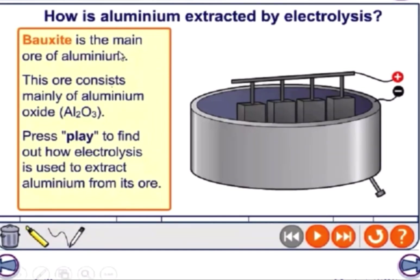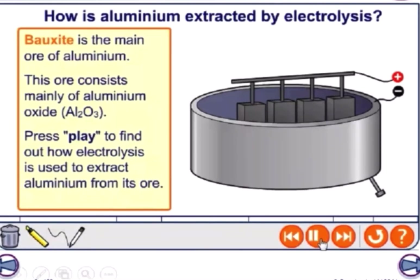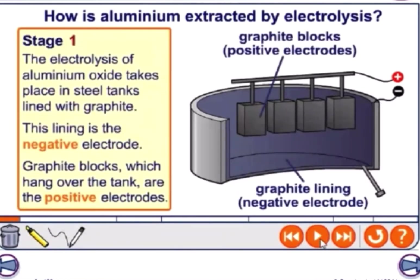Bauxite is the main ore of aluminum and consists mainly of aluminum oxide. In Stage 1, the electrolysis of aluminum oxide takes place in a steel tank lined with graphite. The graphite lining is the negative electrode, and graphite blocks hanging over the tank are the positive electrode.